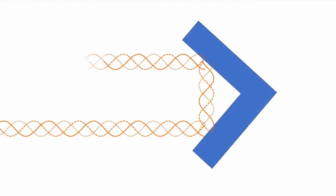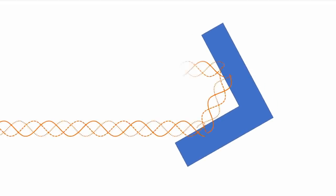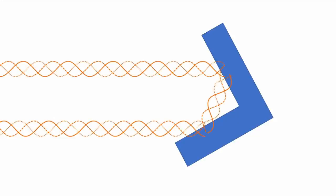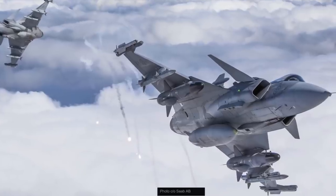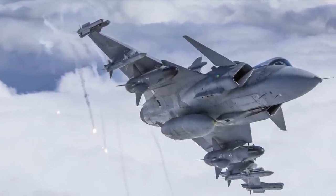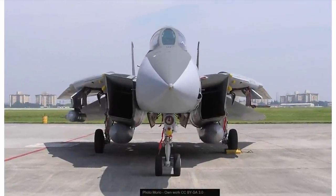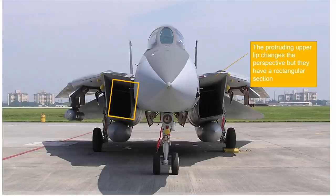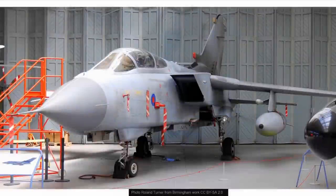Another element you won't find on a stealth plane is 90-degree angles. A 90-degree angle has the property of always reflecting the radiation back toward the direction where it came from, which is exactly what you don't want. This is the reason why external stores are so harmful to stealth. The pylons under the wing are vertical and they are also 90 degrees with the wing. Canards are not particularly stealthy because they form an angle with the fuselage which is usually close to 90 degrees. Classic wedge intakes are very efficient but definitely not stealthy because of all those 90-degree angles.